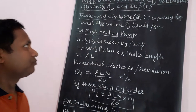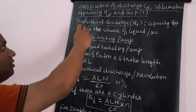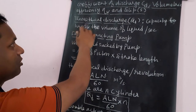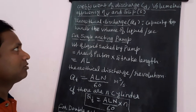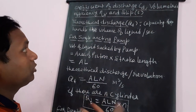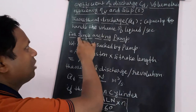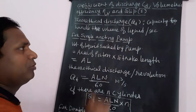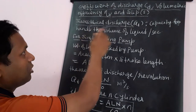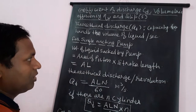Before understanding the coefficient of discharge, we should know what is the theoretical discharge and what is the actual discharge. Theoretical discharge of any reciprocating pump is defined as the ability to deliver liquid per second, or the capacity to handle the volume of liquid per second.